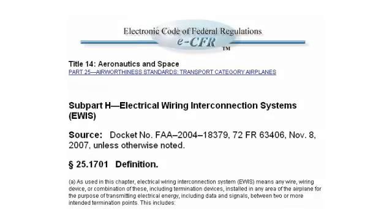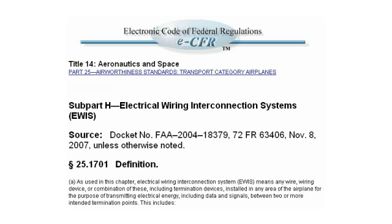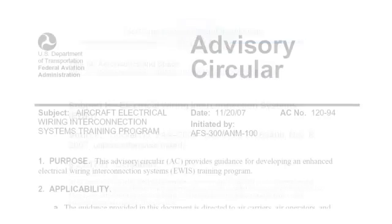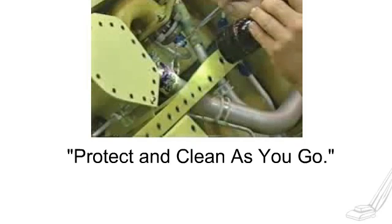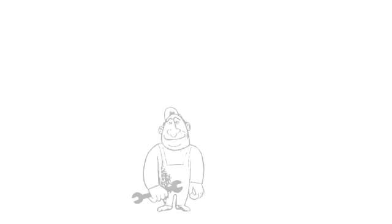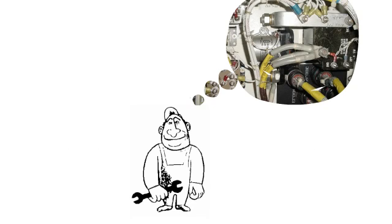If your business has an organized electrical wiring interconnection systems program, commonly called EWIS, you may be working to achieve the goals of FAA Advisory Circular 120-94. A link to this Advisory Circular is included in the student guide. The AC stresses the importance of wiring inspection and promotes a philosophy of protect and clean as you go. So you may or may not be making dedicated wiring inspections, but keep wiring in mind as you perform daily routine tasks.